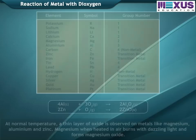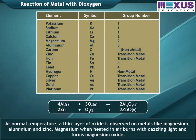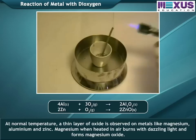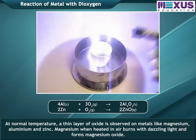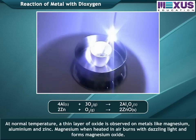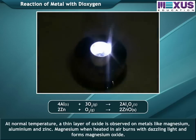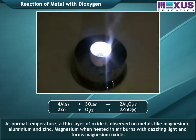At normal temperature, a thin layer of oxide is observed on metals like magnesium, aluminium, and zinc. Magnesium, when heated in air, burns with a dazzling light and forms magnesium oxide.